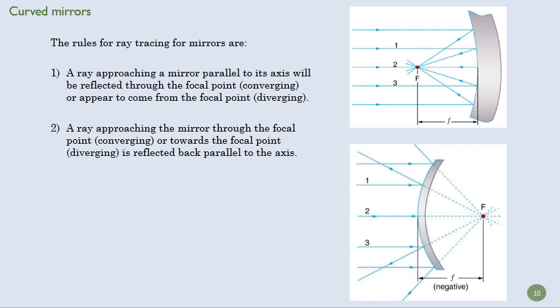A ray that approaches through the focal point goes back parallel. So this is just the inverse of one. So if I have a ray that's coming in here, it's going to bounce off parallel. If I have a ray that comes in here, it's going to bounce off parallel. And again, if I have a ray that's approaching that focal length here, it too is going to bounce off parallel with the diverging ray.